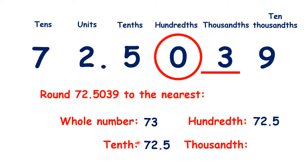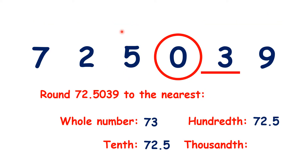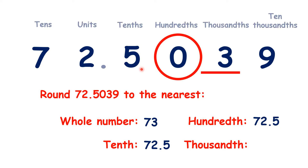Now it might seem confusing, but when we round to the nearest tenth and the nearest hundredth, we get the same answer. But we should be familiar with this because of what we know about rounding whole numbers. If we had 725,039, we can see that rounding to the nearest thousand and to the nearest hundred would give us the same answer — we'd get 725,000 for both. But just as rounding to the nearest whole number place values can sometimes give the same answer, so can rounding to the nearest decimal place value.